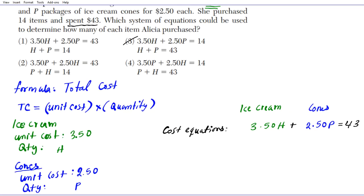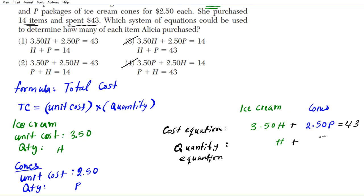With that cost equation, we can eliminate options 3 and 4, leaving options 1 or 2. The quantity equation simply adds the two quantities: h plus p equals 14, since 14 total items were purchased. Checking the options, 3.5h plus 2.5p equals 43 and h plus p equals 14 — the answer to question 3 is option 1.